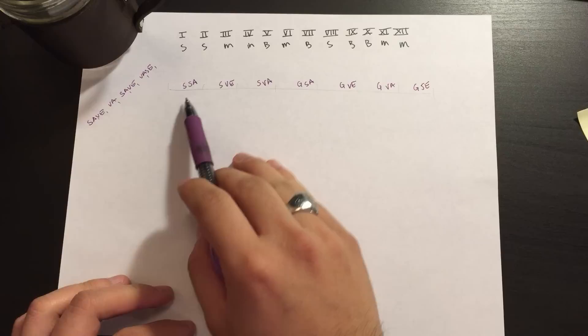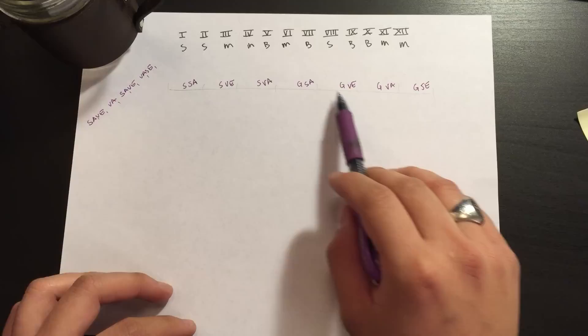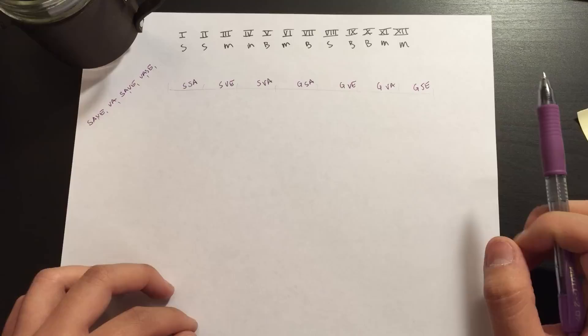And the latter are all generals. So what we end up with is these seven modalities: special somatic afferents, special visceral efferent, special visceral afferent, general somatic afferent, general visceral efferent, general visceral afferent, and general somatic efferent.